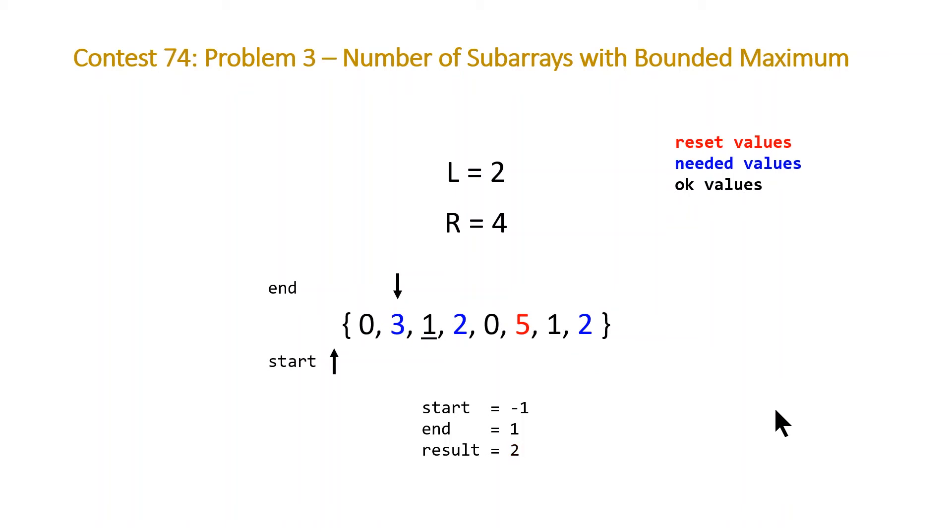Now we'll move to the next element. This is an okay value, so we don't need to adjust end or start, we just do the same plus equals. Now this is taking care of the subarrays 0, 3, 1 and 3, 1. So the prefixes 0 and 3 and 3 are used again.